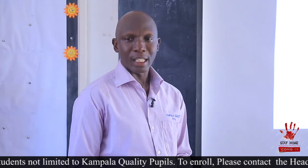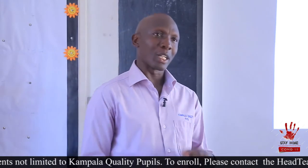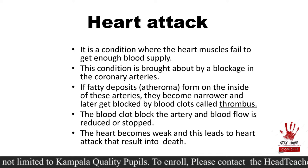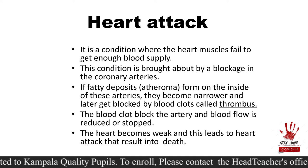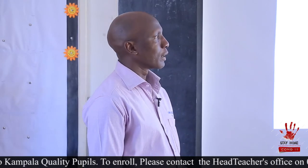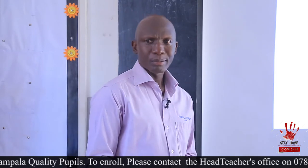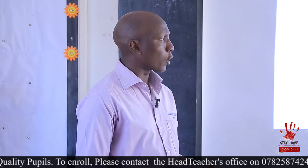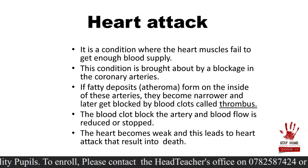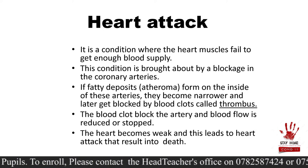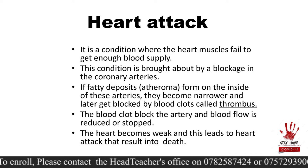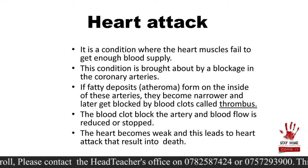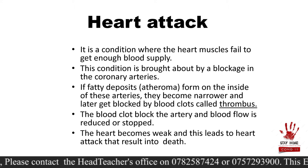As I told you earlier on, the heart is supplied by blood through the coronary arteries. Now the condition is brought about by the blockage of these arteries which supply the heart with blood — these are the coronary arteries. Because of what we eat, especially junk food, fats are going to form inside these arteries. The fat deposits called atheroma form inside these arteries, and they become narrower and narrower until they are blocked by blood clots, which we call thrombus.